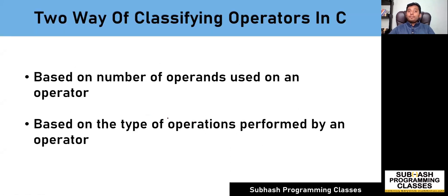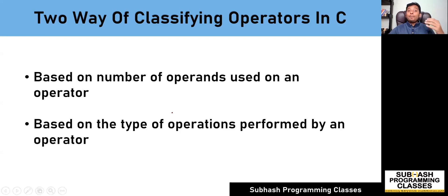In C language, the available operators can be classified in two ways. The first way is based on the number of operands that can be used along with an operator, and the second way is based on the type of operation that you can perform using those operators.